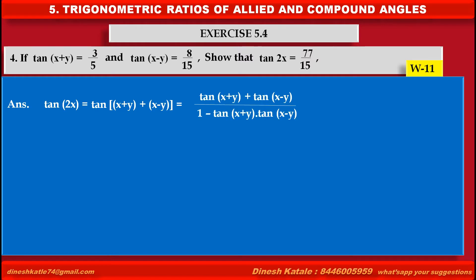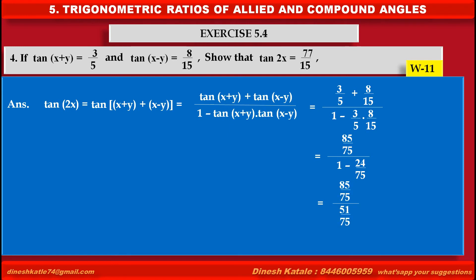We get tan(x+y) + tan(x-y) upon 1 minus tan(x+y) into tan(x-y). Substituting the given values, we get 3/5 plus 8/15 upon 1 minus (3/5 into 8/15). Solving, we get 85/75 upon 1 minus 24/75, which equals 85/75 upon 51/75.